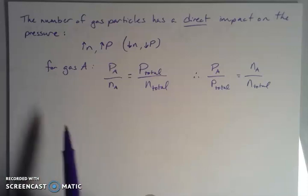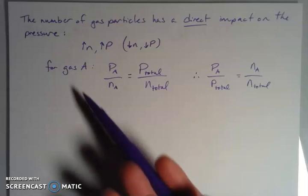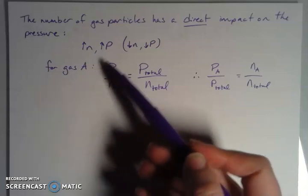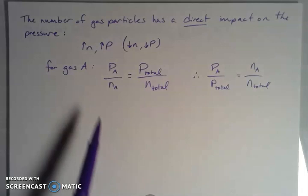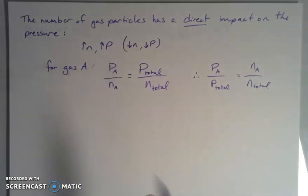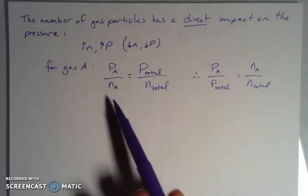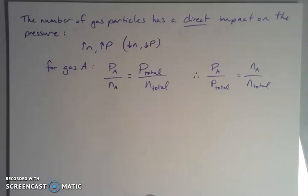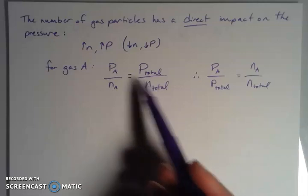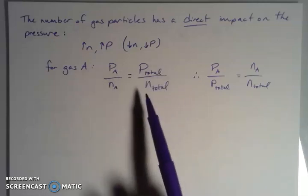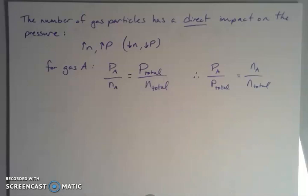So if I wanted to solve for that, for gas A, if we're going back to our example, or any gas, the partial pressure of A, so that's the way that we notate that, is a capital P sub whatever the identity is of that gas. So the partial pressure of A over the number of moles of A is going to be equal to the total pressure of the system over the total number of moles in the system.